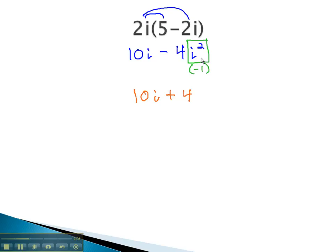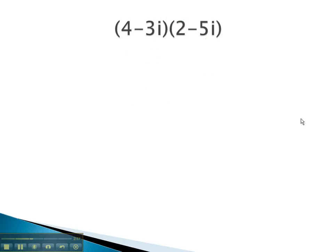You may notice that the i squared ends up ultimately changing the sign on the term it's attached as a factor. We can use this as a shortcut when we're multiplying i's together.